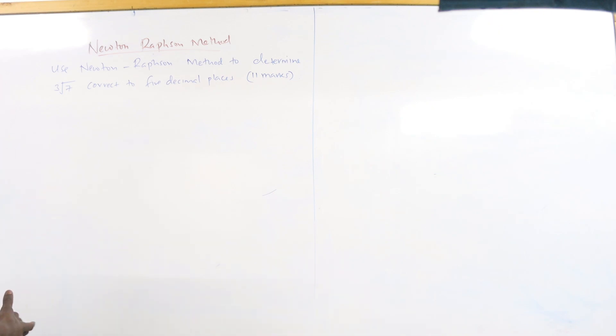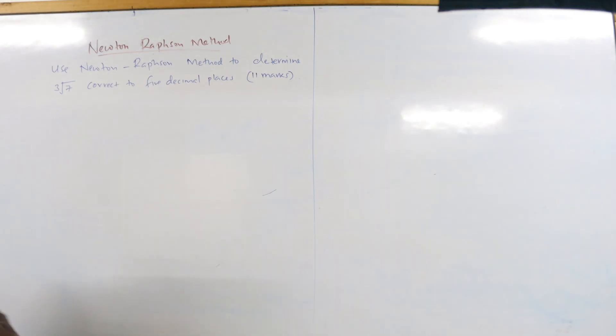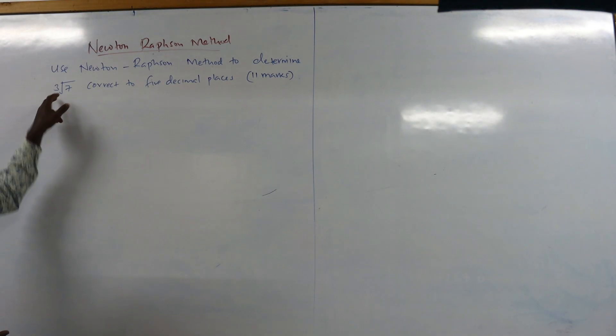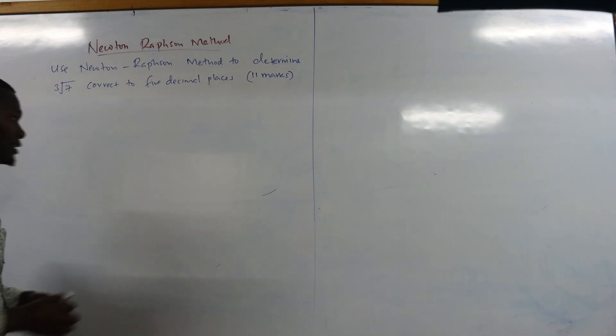Now we have a question here worth 11 marks, and it says: use the Newton-Raphson method to determine the cube root of 7, correct to 5 decimal places.